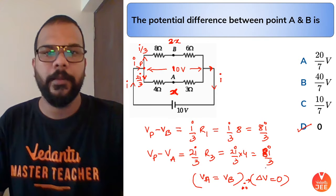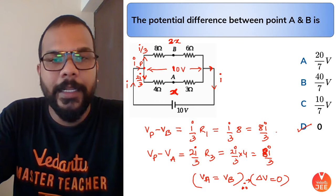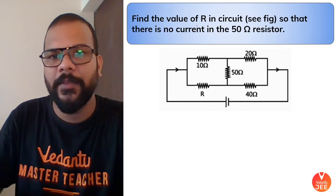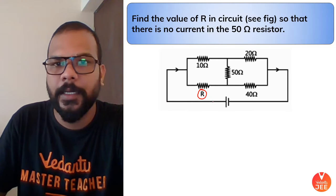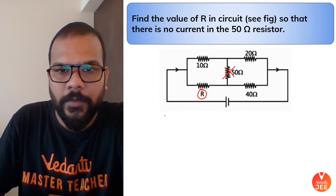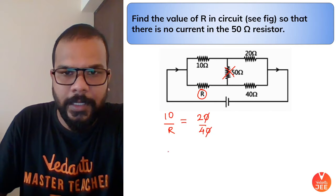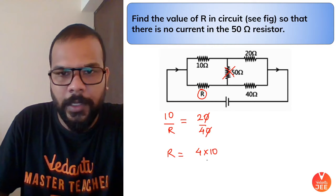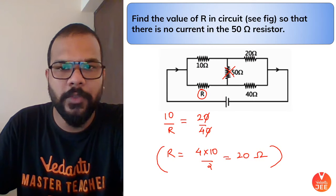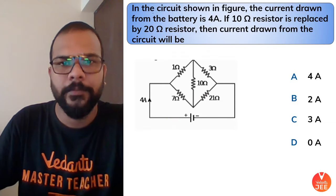That was the Kirchhoff's approach, but using the Wheatstone bridge condition we got it instantly. Next question: find the value of R in the circuit so that there is no current in the 50 ohm resistance. Applying the balance condition: 10/R = 20/40. Solving: R = 10 × 40/20 = 20 ohms. The ratio is 1:2, so R must be 20 ohms.